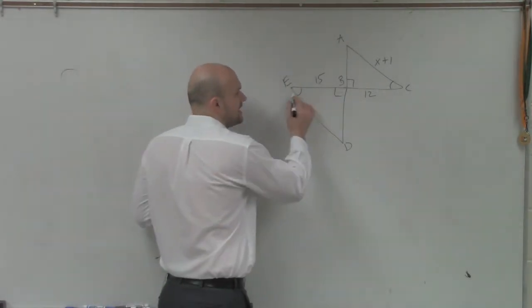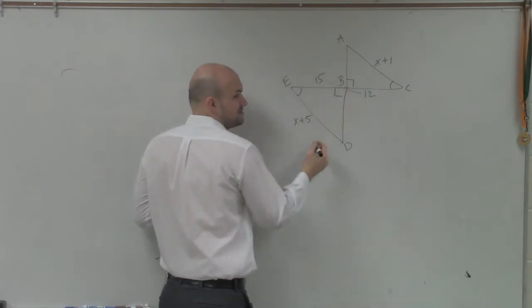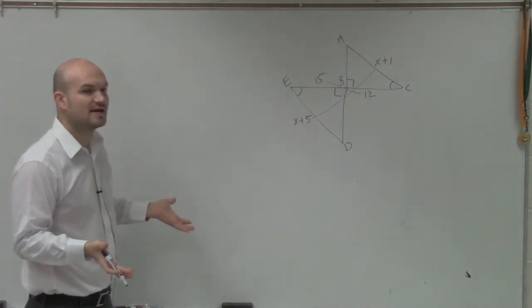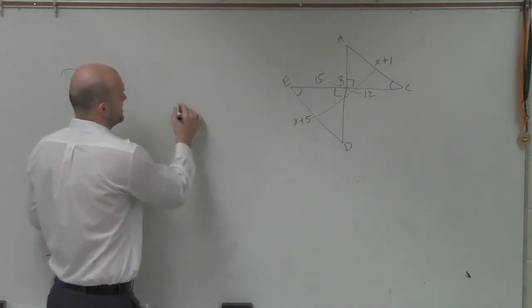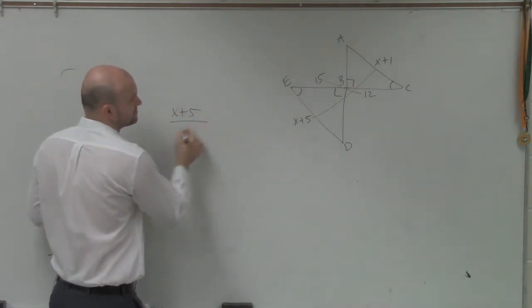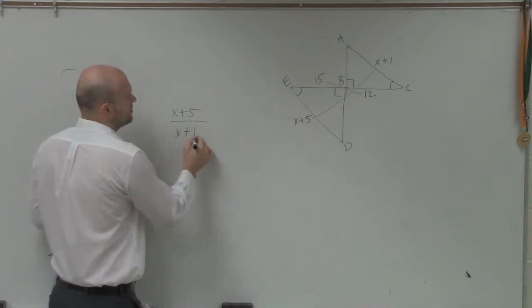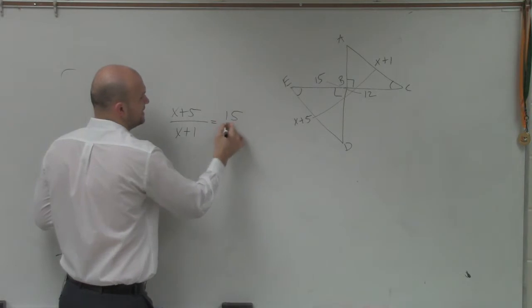And we can see that between the right angle, that these two side lengths are proportional. And these two side lengths are proportional. So again, I'll set up a proportion. And I can say x plus 5 is to x plus 1 as 15 is to 12.